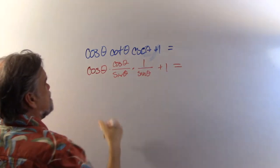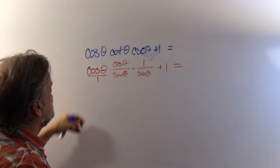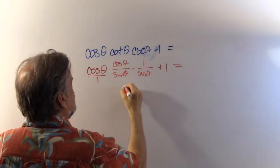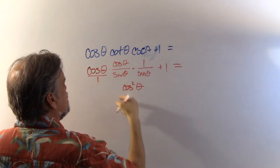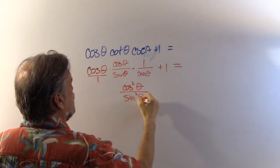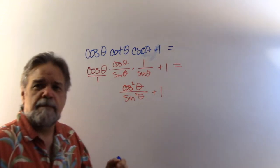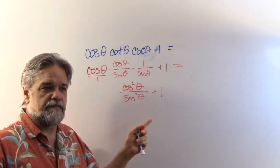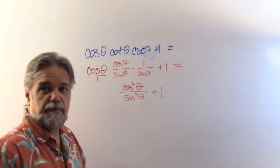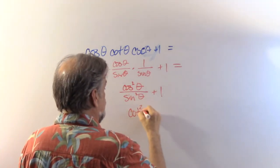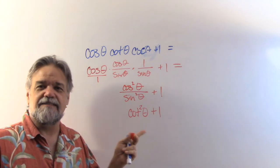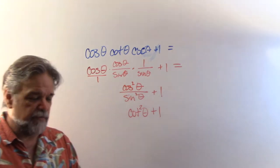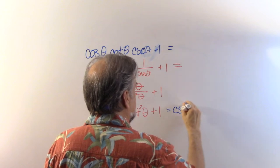So I have cosine of theta over one, times cosine of theta over sine of theta, times one over sine of theta. What I see here is cosine squared of theta divided by sine squared of theta, plus one. Cosine over sine is cotangent, and if they're both squared, that's cotangent squared of theta plus one. That's one of my Pythagorean identities, and cotangent squared plus one is the cosecant squared of theta.